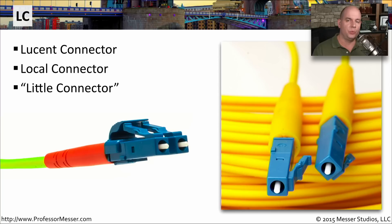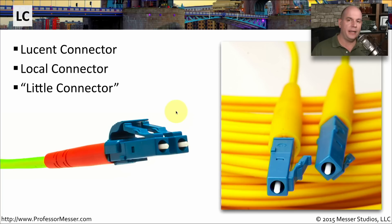And if you have a switch with many different fiber connectors on it, we like to keep those interfaces as small as possible so you can fit a larger number of fiber connections across the same amount of space. The LC connector also has these little tabs on the top that are used to lock it in place, very similar to an RJ45 or an RJ11 copper connection.